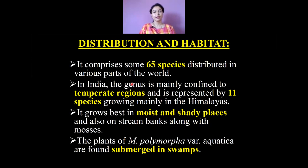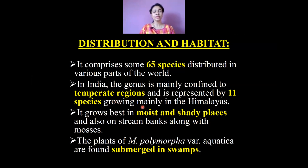Distribution — the genus Marchantia is composed of around 65 different plant species and they are distributed all over the world. But in our country, that is in India, it is mostly confined to the temperate regions and is represented by 11 different species, which are mostly found growing in the Himalayan ranges. Similar to Riccia, this genus Marchantia also grows best in moist and shady places. A particular variety called Marchantia polymorpha var. aquatica has been named so because it is found submerged in swamps.